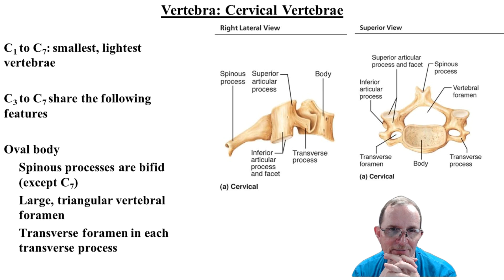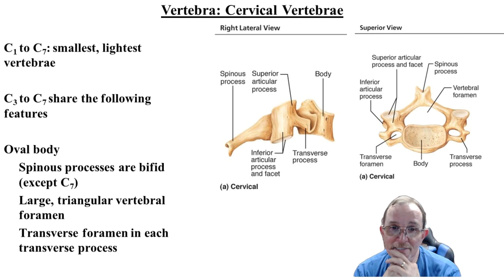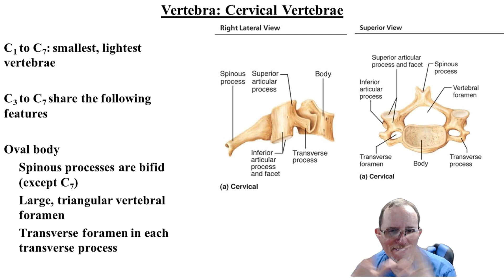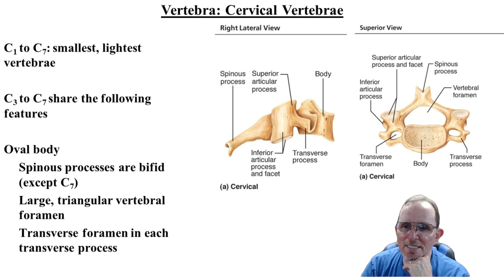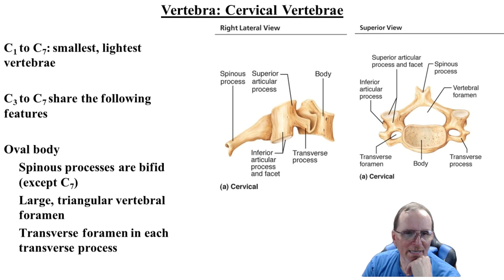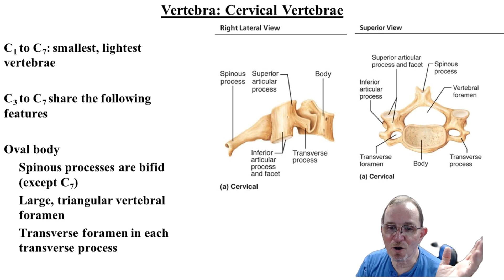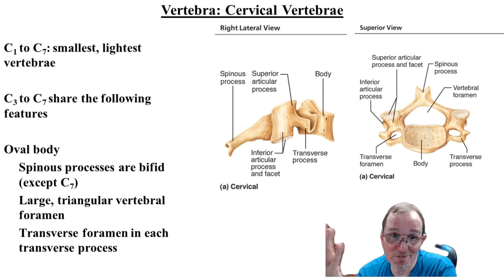Cervical vertebrae, C1 to C7, are small and fairly light because they're only holding up the head. C3 through C7 have a spinous process that's often split — they call it bifid. They have a large vertebral foramen. The key feature is the transverse foramen — in the transverse process there's a hole through which the vertebral arteries run.